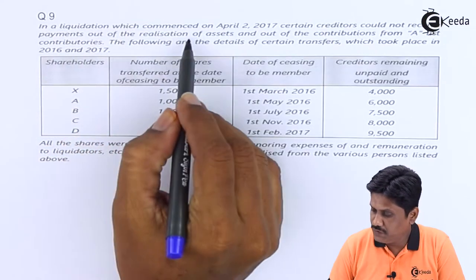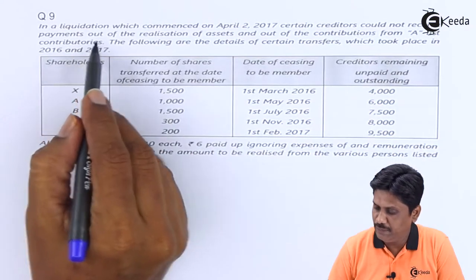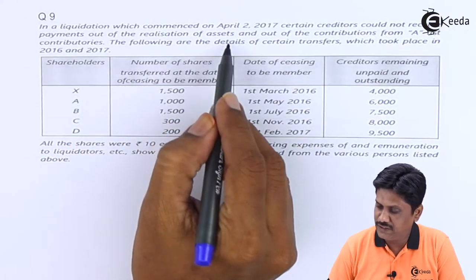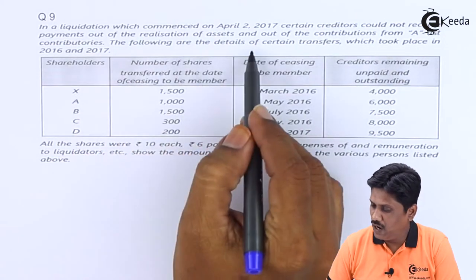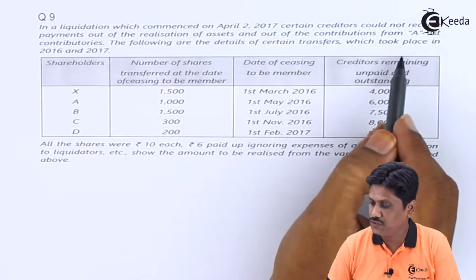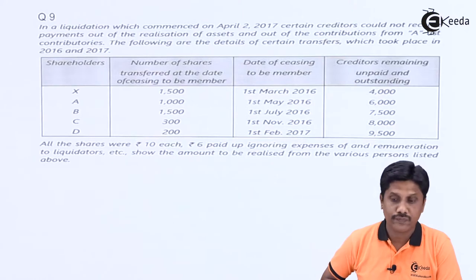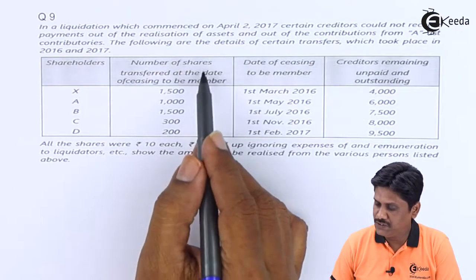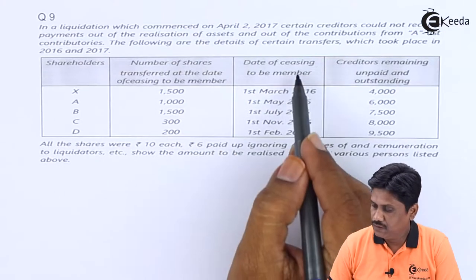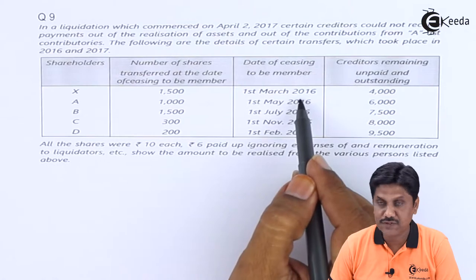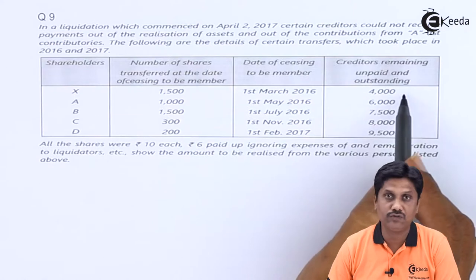In a liquidation which commenced on 2nd April 2017, certain creditors could not receive payment out of the realization of assets and out of contributions from A-list contributors. The following are the details of certain transfers which took place in 2016 and 2017. Shareholder X transferred 1500 shares; date of ceasing to be a member: 1st March 2016; creditors remaining unpaid and outstanding on that date: Rs. 4,000.